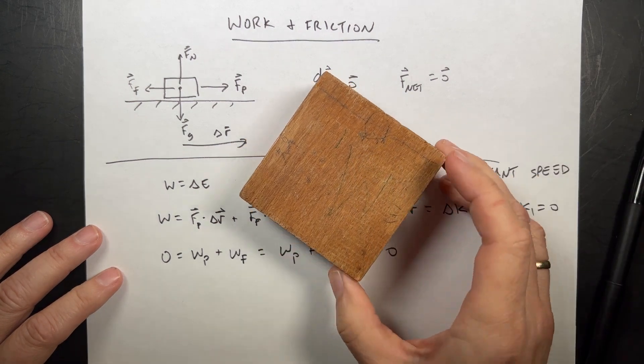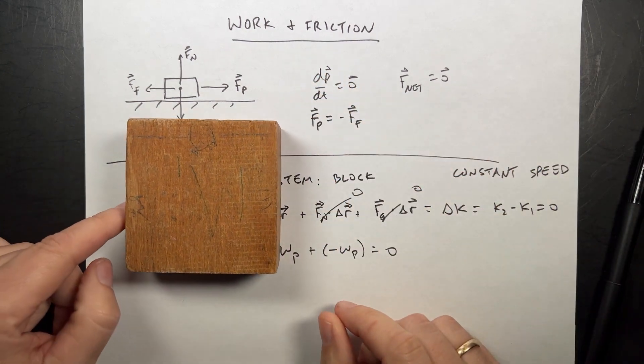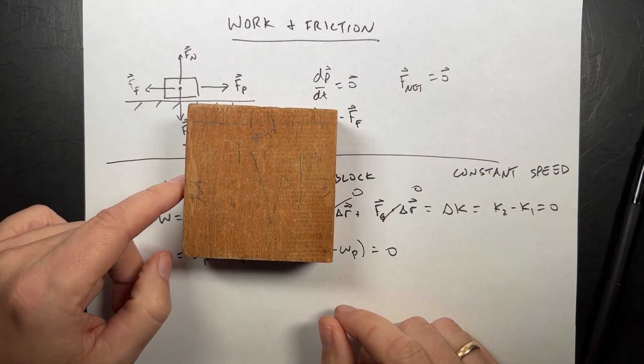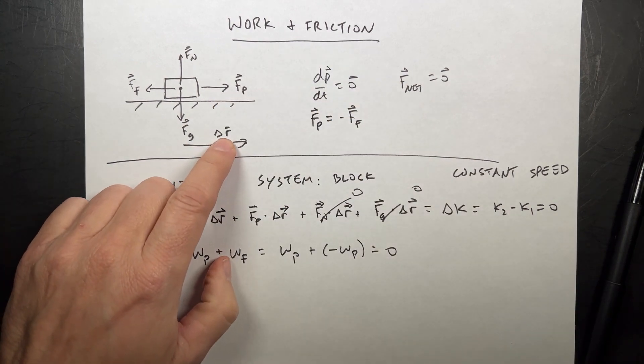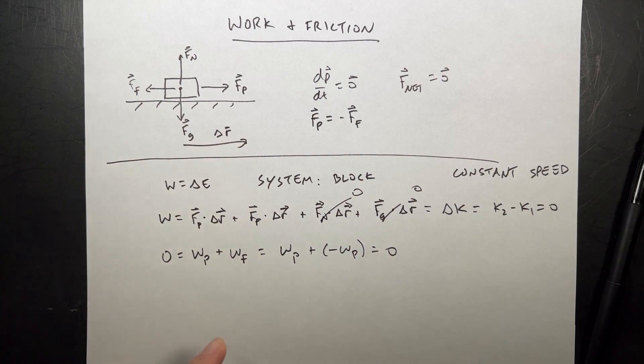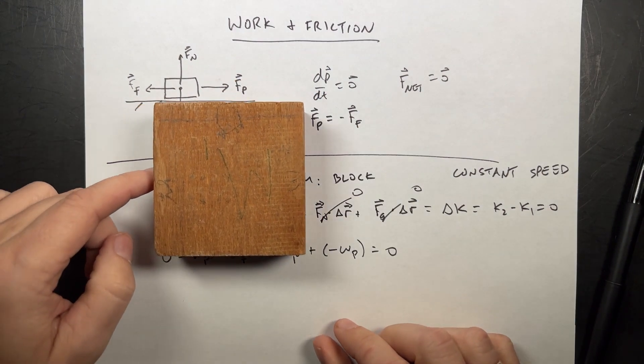But I'm not happy because there's a problem. Go back to the block. If I push this block, imagine I push this for very far. This doesn't matter how far I go. It doesn't say what delta r is. It doesn't matter. So let's say I push it for a kilometer.